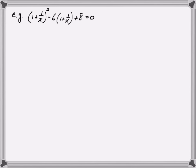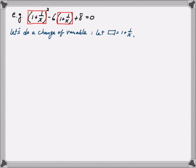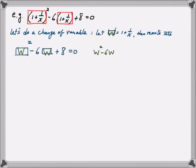In this example, we're solving for x in an equation I recognize as quadratic in form — it's a black box squared, minus 6 times that black box, plus 8 equal to zero. I don't need to expand it yet. To simplify, let's do a change of variable: let w equal 1 + 1/x, so the equation becomes w² - 6w + 8 = 0. This is now a typical quadratic equation we can solve by factoring.